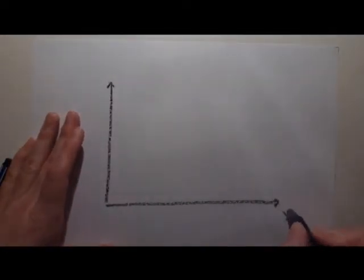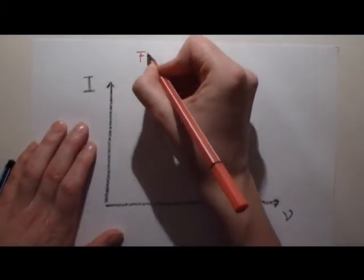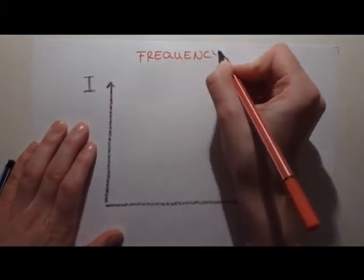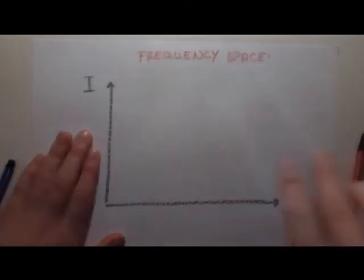If we take a look into the distribution of those frequencies in the frequency domain, we only can see discrete or very sharp peaks then.